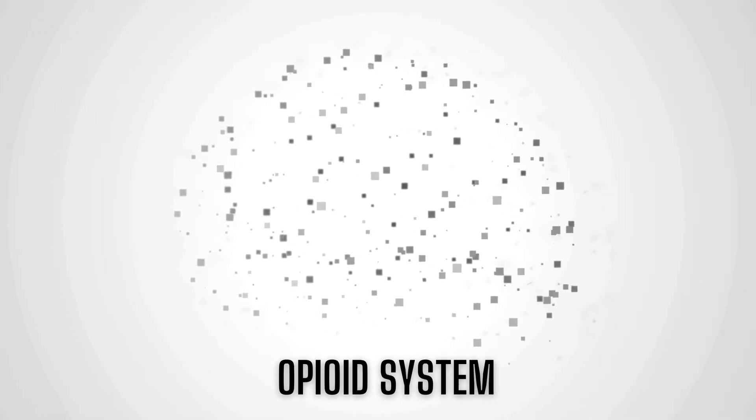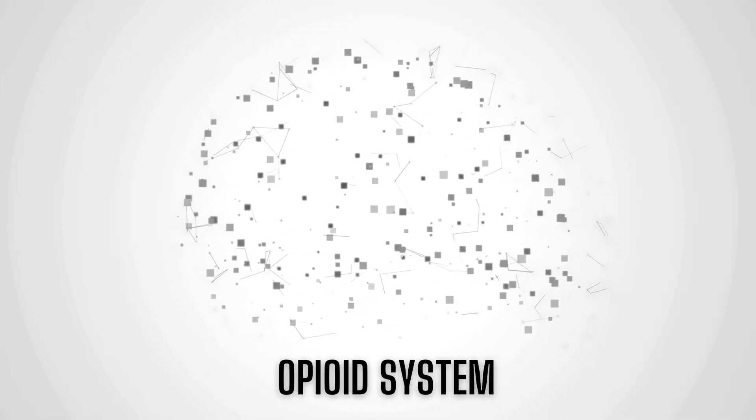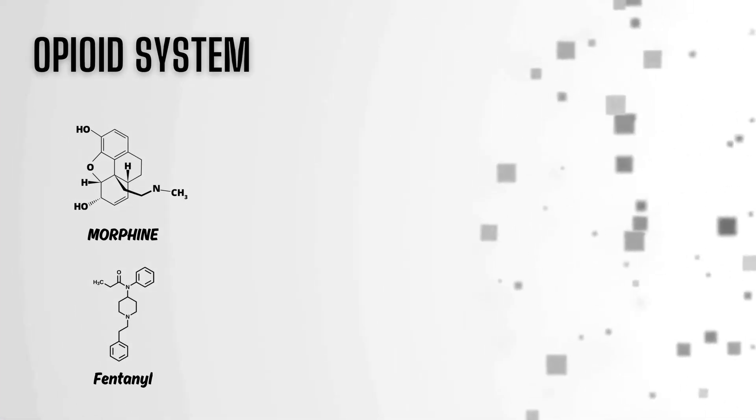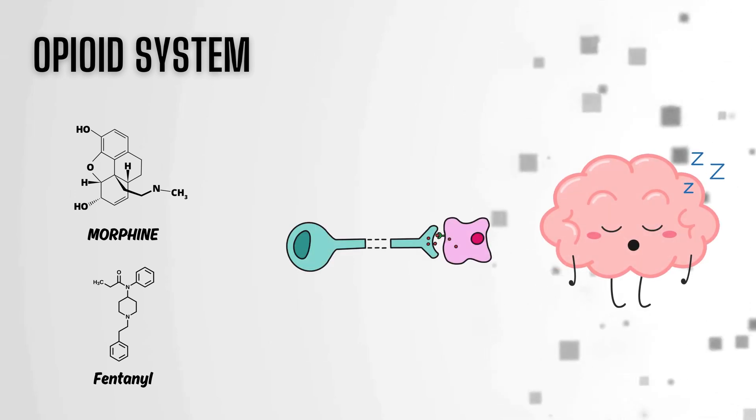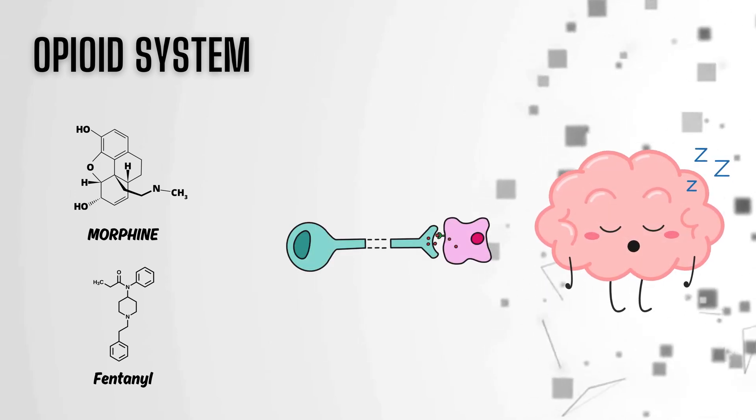And don't forget about the opioid system. Opioids, like morphine or fentanyl, interact with receptors in your brain and spinal cord to dull pain and make you feel sleepy.